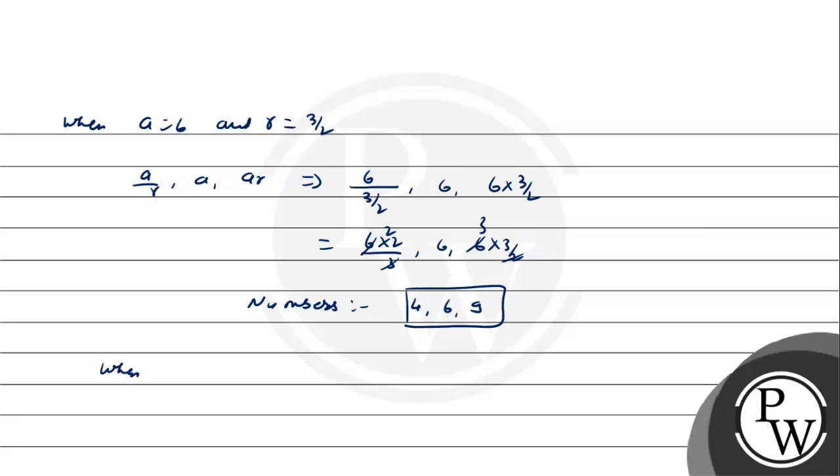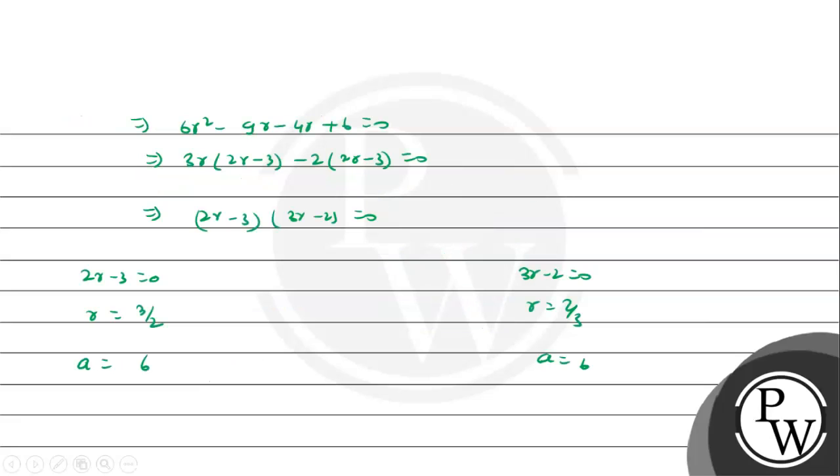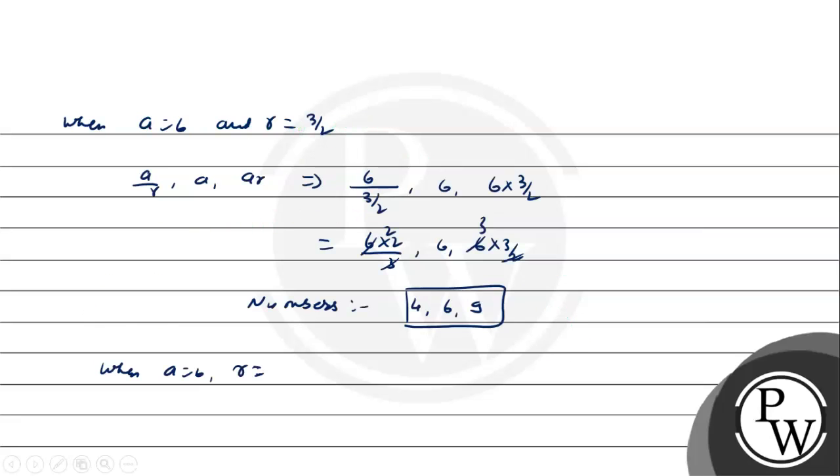Second case when R equals 2 by 3, then numbers are A by R which is 6 by 2 by 3 equals 9, then 6, and 6 into 2 by 3 equals 4. So the numbers are 9, 6, 4.